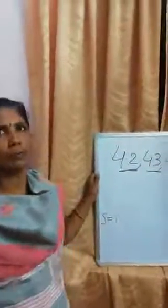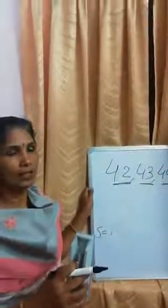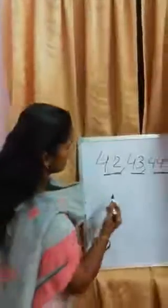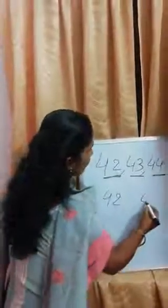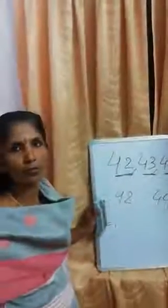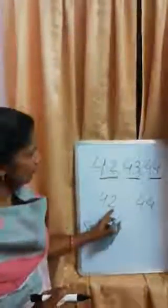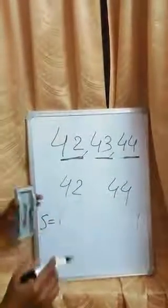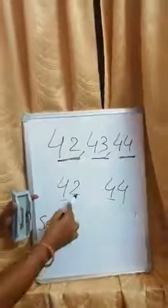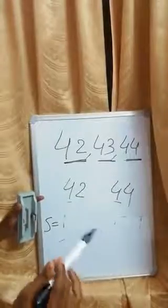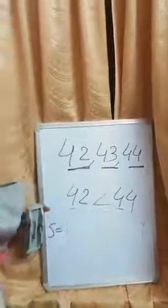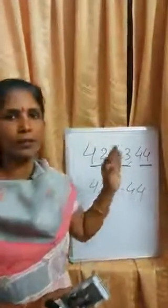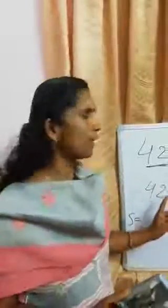After number and before number already studied. Now we study greater than and less than signs. See, same numbers 42 and 44. The 1's place digit of 42 is 2 and 10's place digit is 4. For 44, 1's place digit is 4 and 10's place digit is 4. The 10's place is already the same, so we compare 2 and 4. Since 4 is greater than 2, we use the less than symbol — 42 is less than 44. Today we studied before, after, between number, and less than sign.